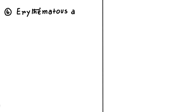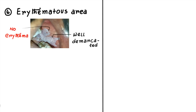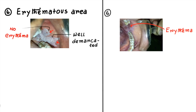After that, you should check the erythematous area. The periphery of Leukoplakia is most of the time well-demarcated and there is no erythematous area surrounding the white patch. However, in case of Lichen Planus, you can find an erythematous area surrounding the white areas. Here you can see there is no erythematous area surrounding the patch, but here in Lichen Planus you can clearly see the erythematous area.